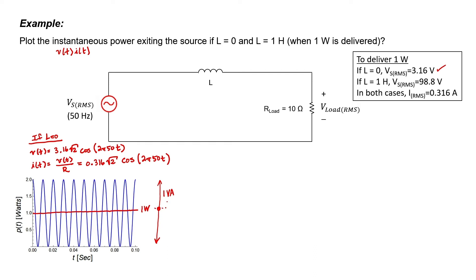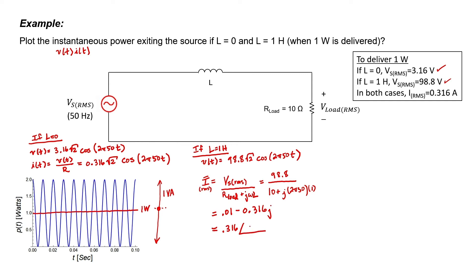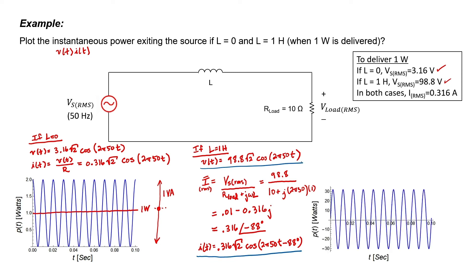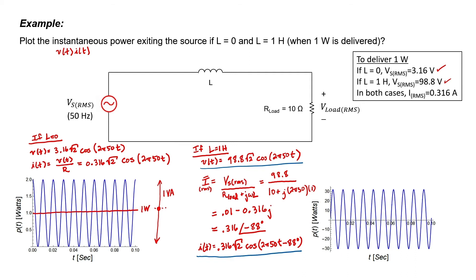Let's now see what happens when we have that 1 Henry inductor on the line. Let's find the RMS phasor current using Ohm's law with a complex load. Writing this in polar form gives us the RMS value of the current and the phase angle. I need the phase angle because I'm going to multiply voltage times current in the time domain. Looking at the resulting power plot: sometimes the power flow from the source is positive and reaches almost 31 watts. Sometimes it is negative — meaning power flows back from the load into the source — at almost minus 30 watts. The average power, actually delivered to the resistor, is exactly 1 watt. But look at the apparent power — nearly 31 volt amperes flows back and forth between load and source.